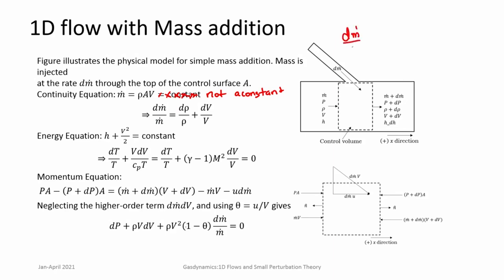dm-dot by m-dot: here rho·A·v is the mass flow rate through a particular cross section, that is m-dot. So dm-dot by m-dot can happen due to changes in density, change in area, and change in velocity. If you consider a constant area duct, then dA by A is zero, so it becomes d-rho by rho plus dv by v. A change in mass flow rate will be reflected in terms of change in velocity and density.